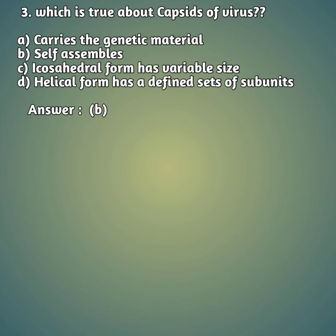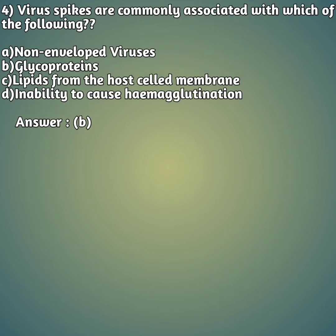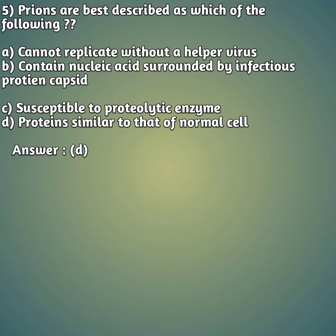Fourth question: virus spikes are commonly associated with which of the following? Option A: non-enveloped viruses. Option B: glycoproteins. Option C: lipids from the host cell membrane. Option D: inability to cause hemagglutination. The right answer is option B — virus spikes are commonly associated with glycoproteins.